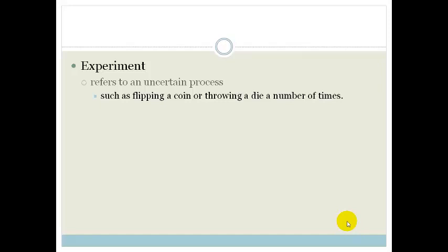That is an uncertain process. You don't know if the coin is going to come up heads or tails, or you don't know if the die is going to come up in a 1, 2, 3, 4, 5 or a 6. So that's an example of an experiment.